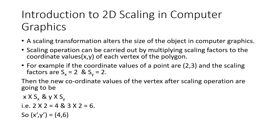Scaling operations can be carried out by multiplying the scaling factors Sx and Sy with the coordinate values of each vertex of the polygon. For example, if the coordinate values of a point are 2 and 3, and the scaling factors are Sx=2 and Sy=2, then the new X coordinate is 2 multiplied by 2, which equals 4. And the new Y coordinate is 3 multiplied by 2, which equals 6. So the new coordinate values X' and Y' are 4 and 6. This is how we get the new coordinate values by multiplying them with the scaling factors Sx and Sy.